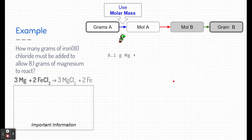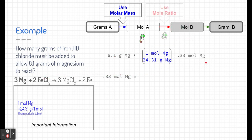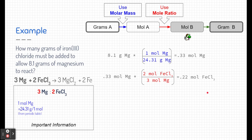Let's start with what we have: 8.1 grams of magnesium. In the first step we convert grams to moles using the molar mass. One mole of magnesium equals 24.31 grams from the periodic table. I plug that into the conversion, making sure grams of magnesium is on the bottom. Next, I need to go from moles of magnesium to moles of iron(III) chloride using the mole ratio — three magnesium to two iron(III) chloride. I put moles of magnesium on the bottom so the units cancel out.